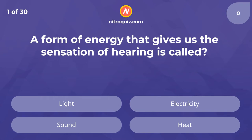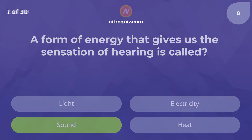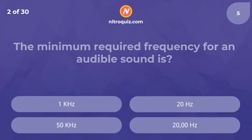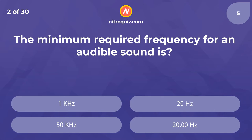A form of energy that gives us the sensation of hearing is called — the answer is sound. The minimum required frequency for an audible sound is — the answer is 20 hertz.